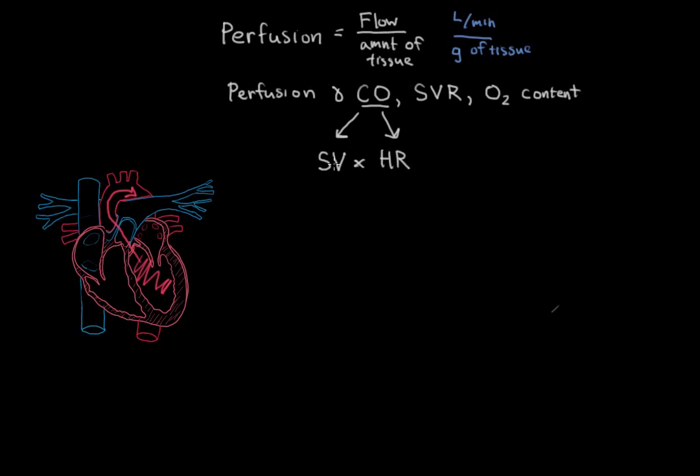So looking at the units of both of these, stroke volume is measured in liters per beat, so that's how much fluid escapes from the heart with each beat, times the heart rate, which is the number of beats per minute. And so doing some simple arithmetic, these two cancel out, and you see that cardiac output is liters per minute. So this is the measurement of cardiac output.